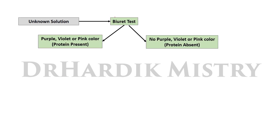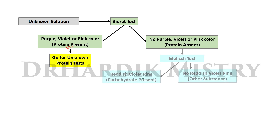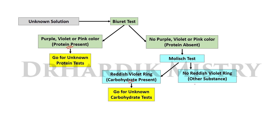For identification of an unknown solution, first go for the Biuret test. If you see purple, violet, or pink color, protein is present; if not, protein is absent. If protein is absent, go for the Molisch's test. If you see a reddish-violet ring, carbohydrate is present and proceed with the unknown carbohydrate tests.